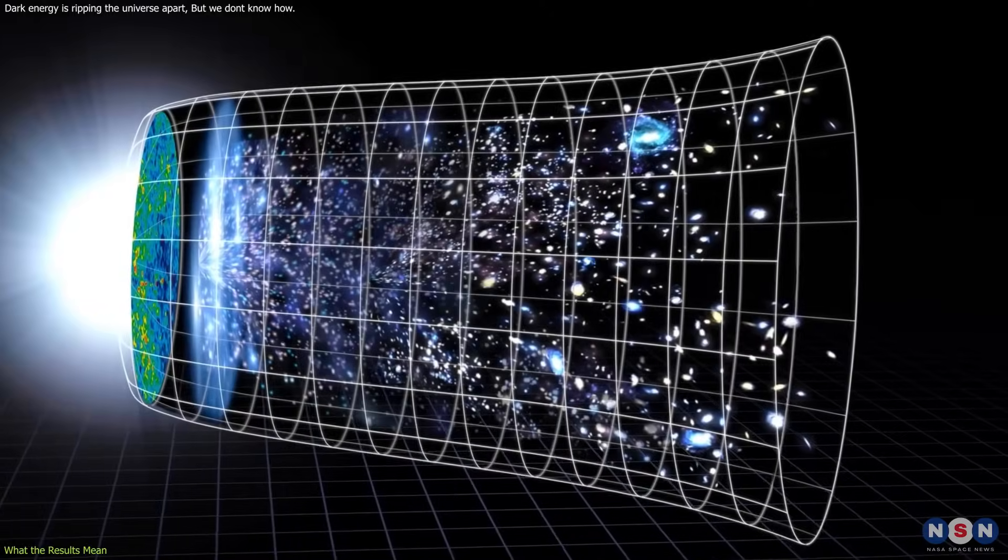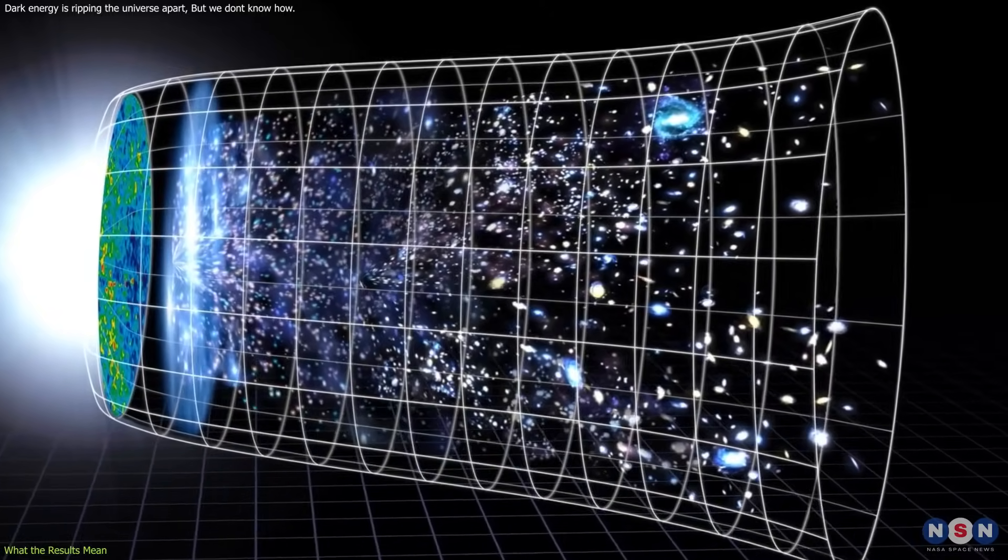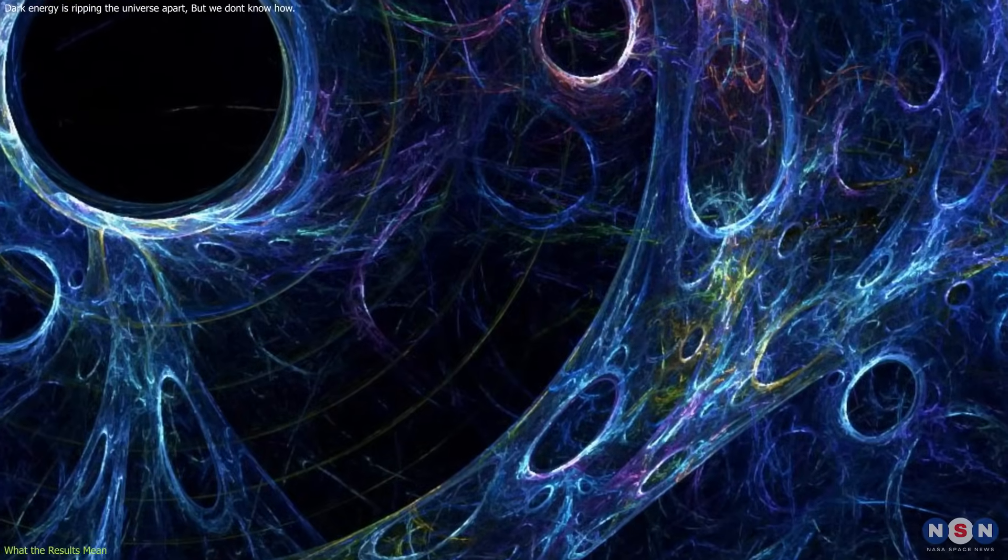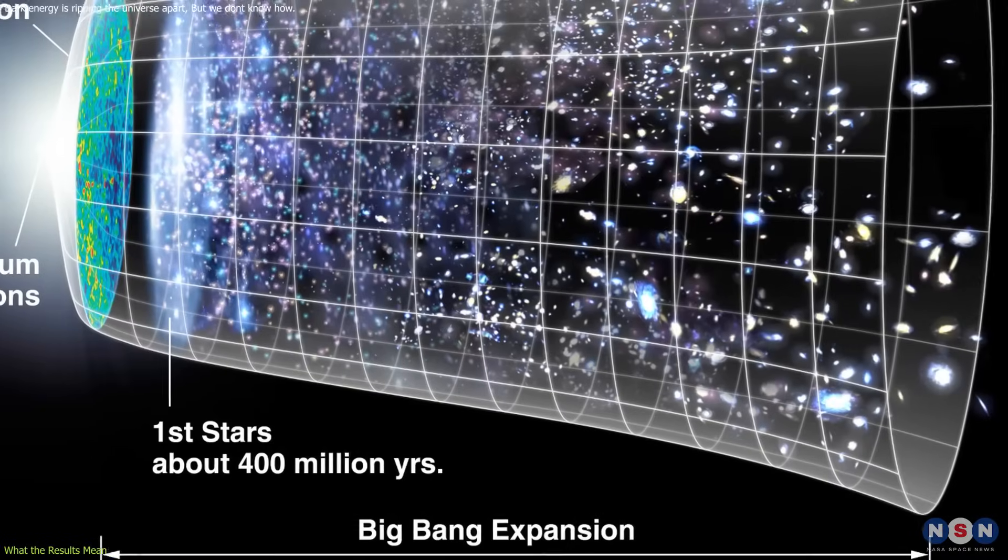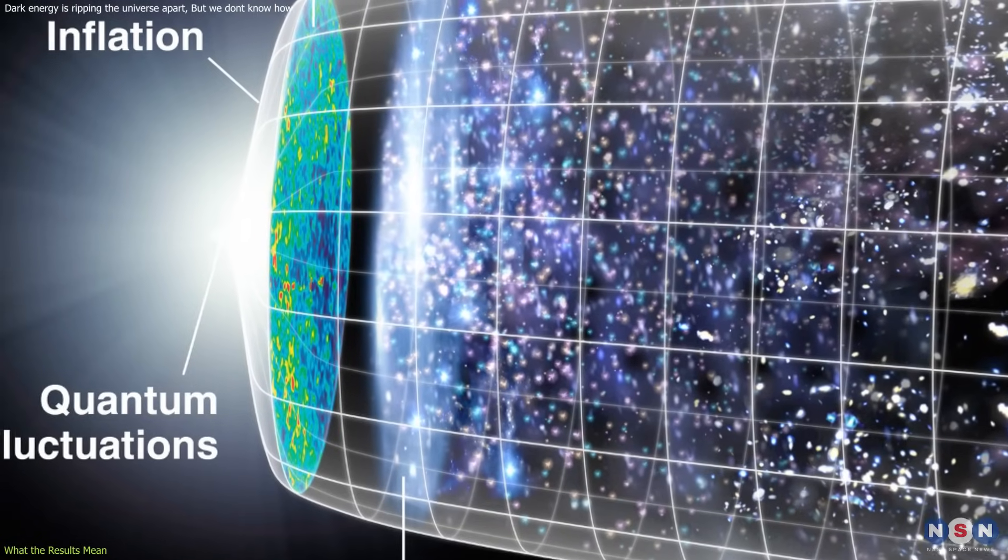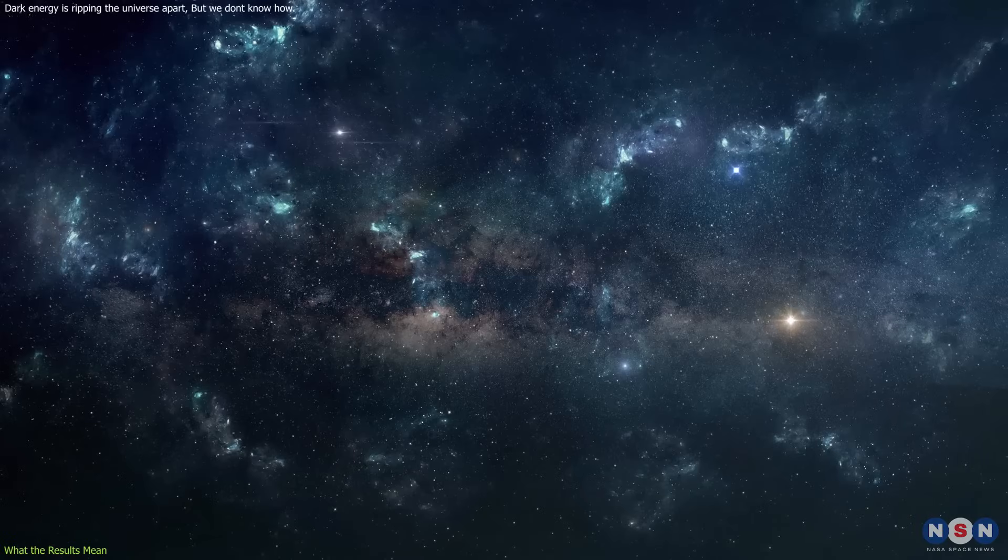The model has six parameters that describe the properties and behavior of the universe, such as the density of matter, the density of dark energy, the age of the universe, and the amplitude of the initial fluctuations that gave rise to the large-scale structure of the universe.